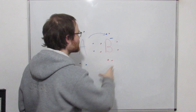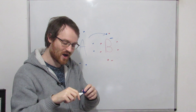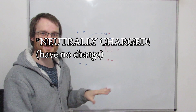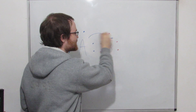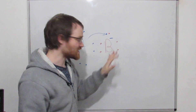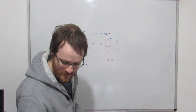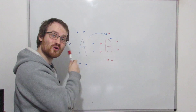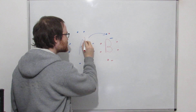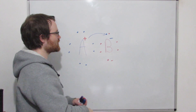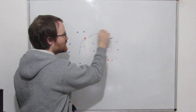Now neither of these atoms has the same number of protons as electrons. This atom that took on an extra electron is now a negative ion — electrons are negatively charged so it now has an overall negative charge. And because the other atom lost an electron, it now has more protons than electrons, so this is now a positive ion.